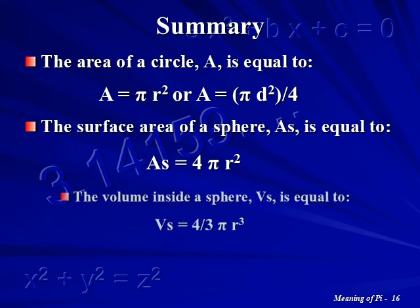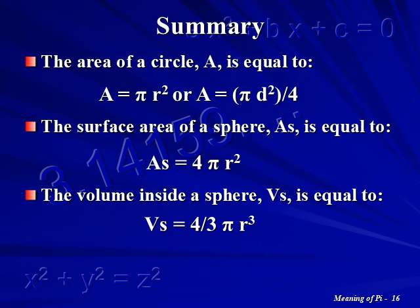The volume inside a sphere, VS, can be calculated from the radius by using the equation VS equals 4 thirds Pi times the radius cubed. The volume inside a sphere, VS, can be calculated from the diameter by using the equation VS equals 1 sixth Pi times the diameter cubed.